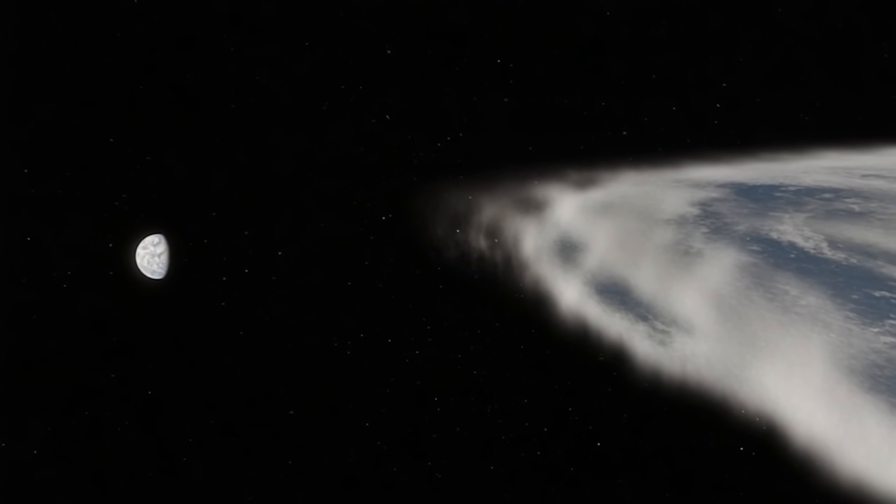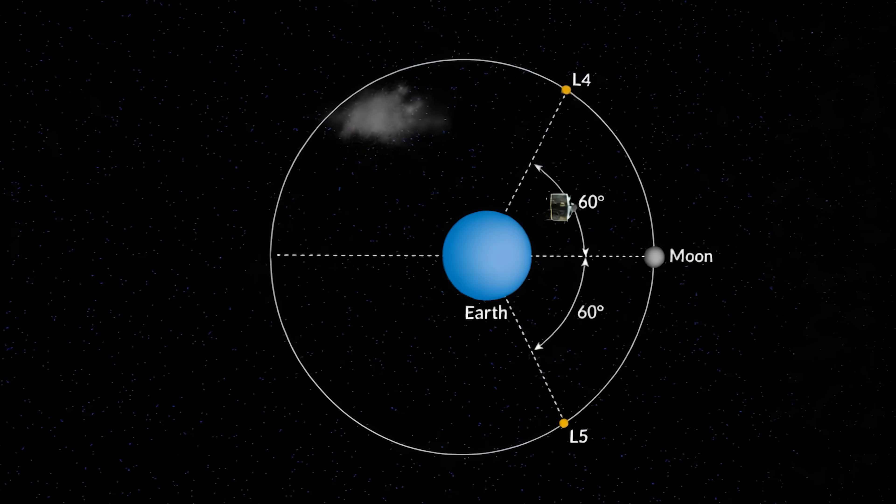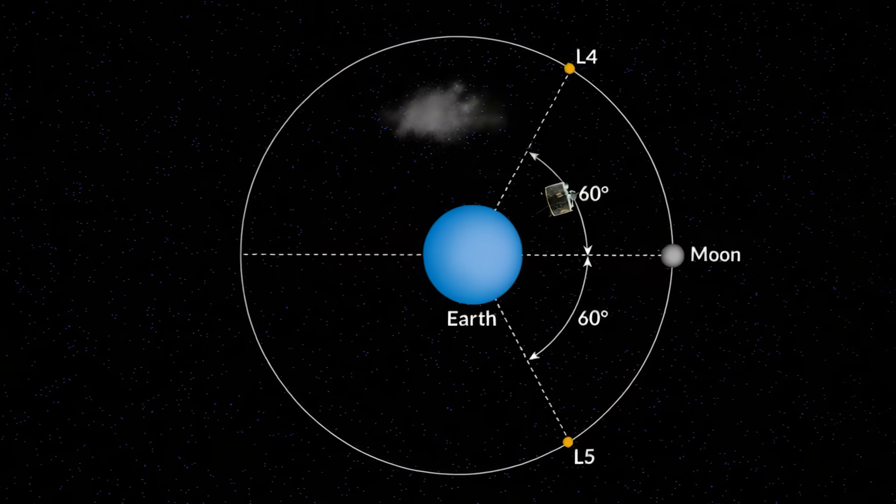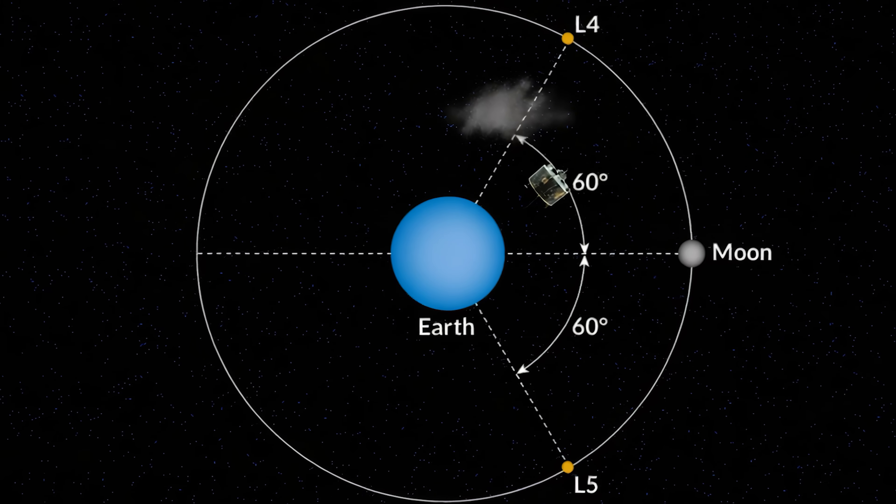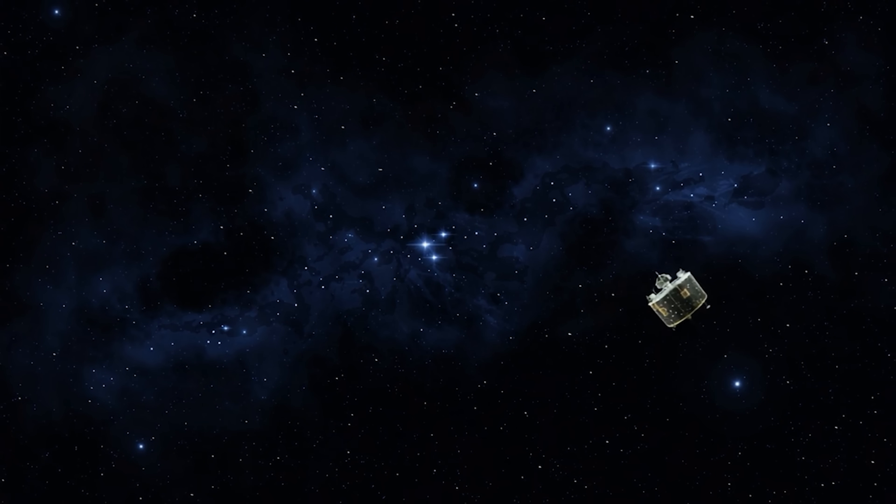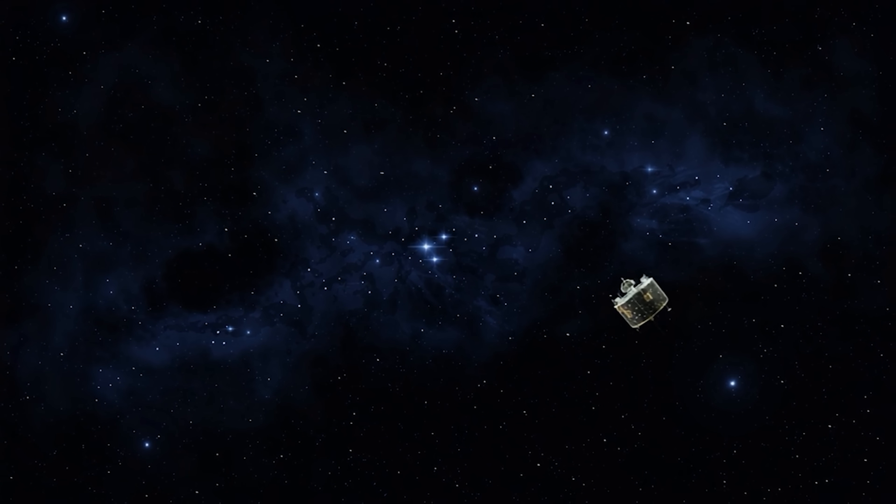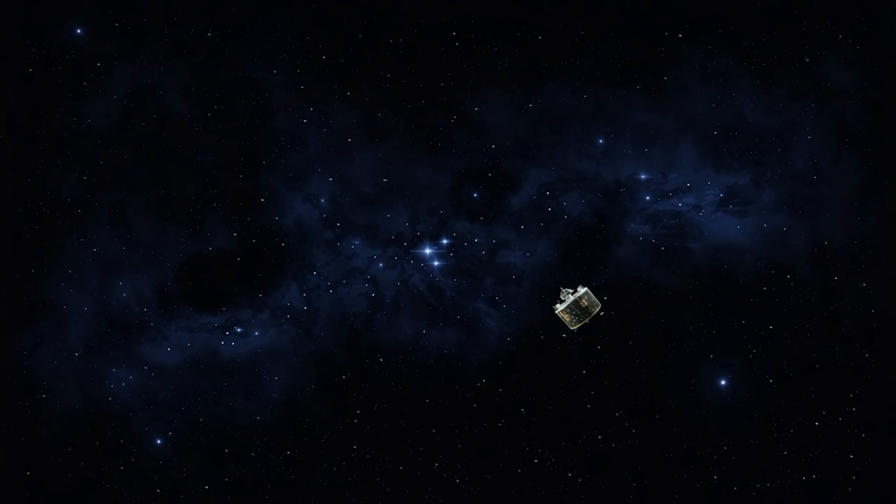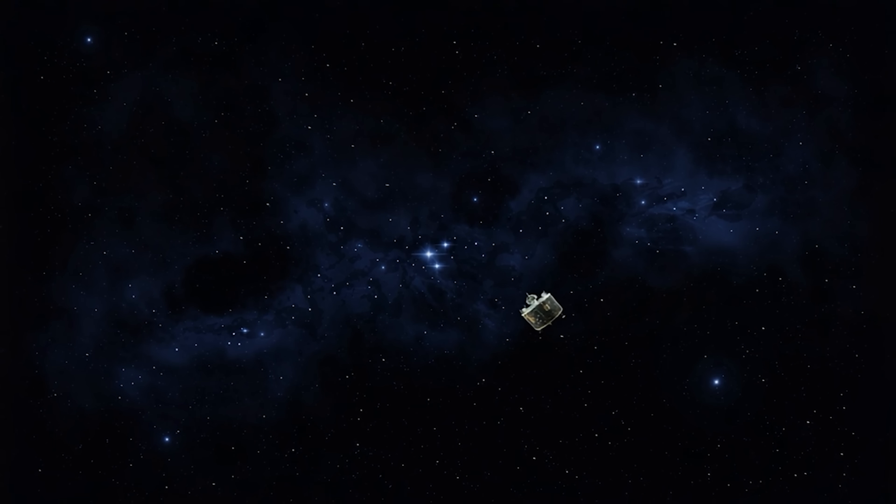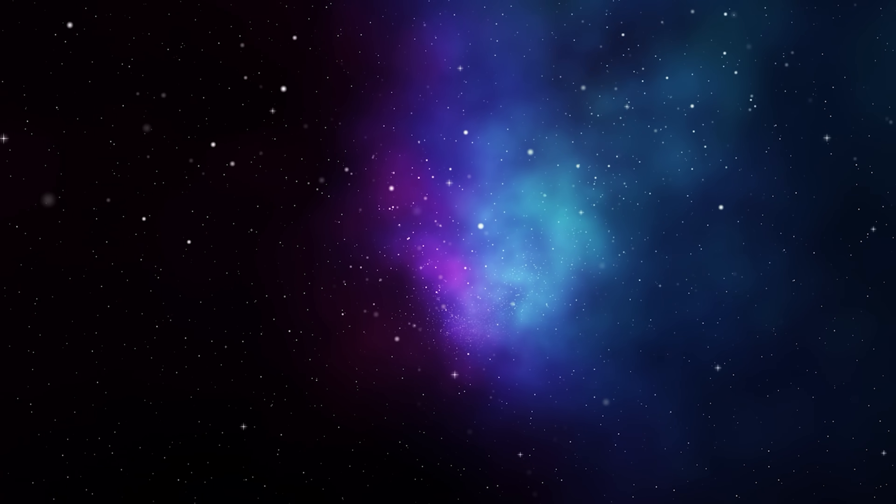But here's where the mystery deepened rather than resolved. Instead of admitting defeat, Kordolewski supporters pointed out a crucial flaw in using Hitten as the definitive test. The spacecraft had passed through the Lagrange points quickly, spending only brief moments in each location. If the ghost moons were dynamic structures that formed and disappeared over longer time periods, a fast-moving probe might easily miss them entirely. This explanation frustrated skeptics even more because it made the ghost moons effectively unfalsifiable. Every failed detection could be explained away by claiming the clouds just happened to be invisible or absent during that particular observation. It was like trying to prove the non-existence of something that could allegedly vanish whenever someone tried to study it seriously.